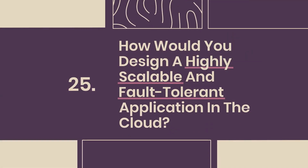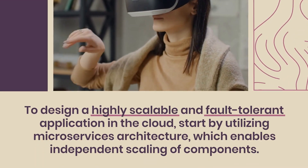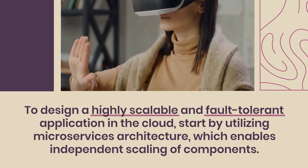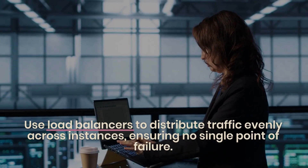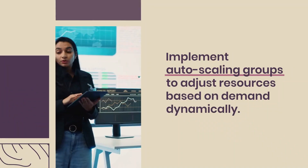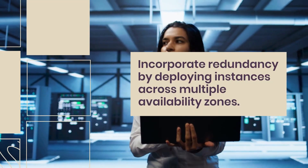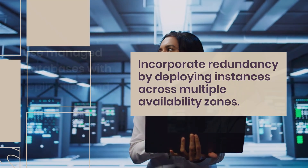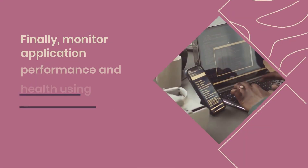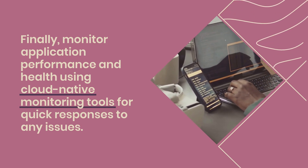25. How would you design a highly scalable and fault-tolerant application in the cloud? To design such an application, start by utilizing microservices architecture, which enables independent scaling of components. Use load balancers to distribute traffic evenly across instances, ensuring no single point of failure. Implement auto-scaling groups to adjust resources based on demand dynamically. Incorporate redundancy by deploying instances across multiple availability zones. Use managed databases with replication and backup features to ensure data durability. Finally, monitor application performance and health using cloud-native monitoring tools for quick responses to any issues.